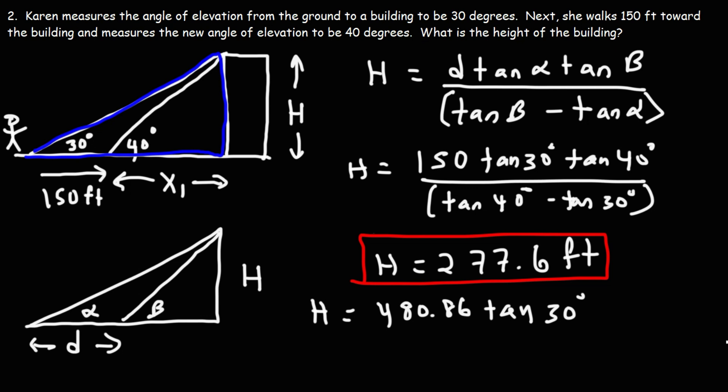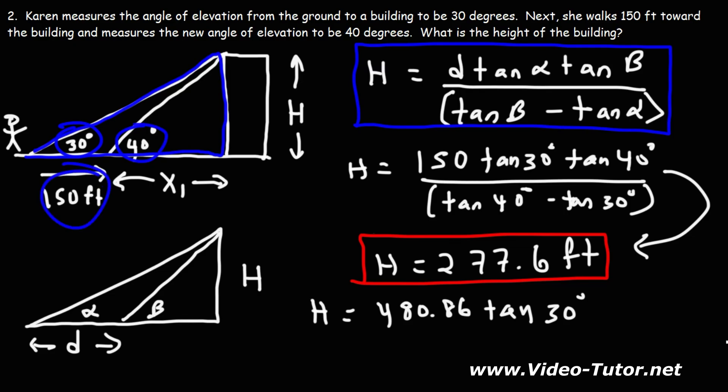So it's 150 times tan 30 times tan 40, all divided by, in parentheses, tan 40 minus tan 30. If you type it in correctly, you're going to get 277.6 feet. So that's the formula you could use to get the answer all in one step. All you need is the two angles and the distance between the two angles, and you can calculate the height of any building.